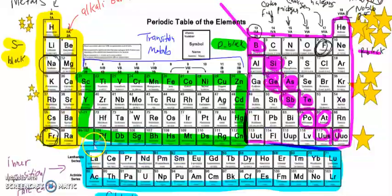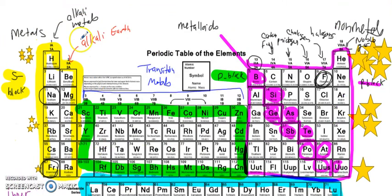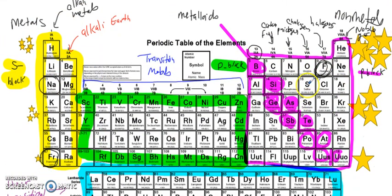Looking at the periodic table, the metals on the left are the 'losers' — they lose an electron and drop down to a previous noble gas configuration. But non-metals to the right of the zigzag line — take sulfur, for example — will want to gain two electrons to become like argon. That's easier than losing six electrons to become like neon. Chlorine has 17 protons and 17 electrons; it really wants to be like argon, so it can gain one electron. Chlorine is lazy — it wants to do the least amount of work, so it gains that one electron and becomes like argon.